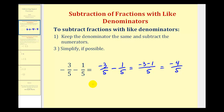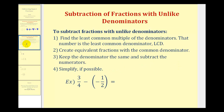It's important to remember when adding or subtracting fractions, we must have a common denominator. If we don't have the same or like denominators, the first step is to determine the least common multiple of the denominators — this is called the least common denominator, or LCD. Once we find the LCD, we create equivalent fractions with this common denominator, then keep the denominator the same, subtract the numerators, and simplify if possible.